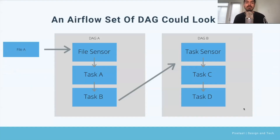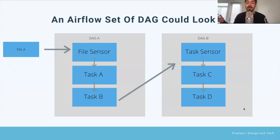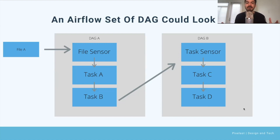If we look at a general Airflow DAG, you might have some sort of sensor waiting for some sort of file to load. That file sensor might exist in DAG A, and once that file comes into existence it'll kick off DAG A, running through the file sensor, task A, task B — whatever those operators might be. Then you might have a task sensor in your next DAG that is waiting for task B to finish and will then kick off the next DAG. That's kind of how these pipelines work — you could have tons and tons of dependencies. It can become very complex and you could accidentally create some sort of circular logic, but this is the general landscape of how it looks from a very high level.